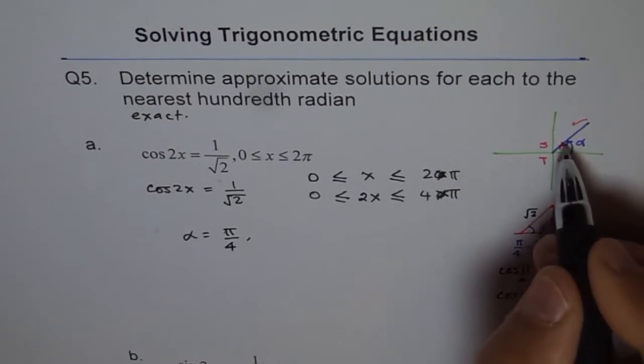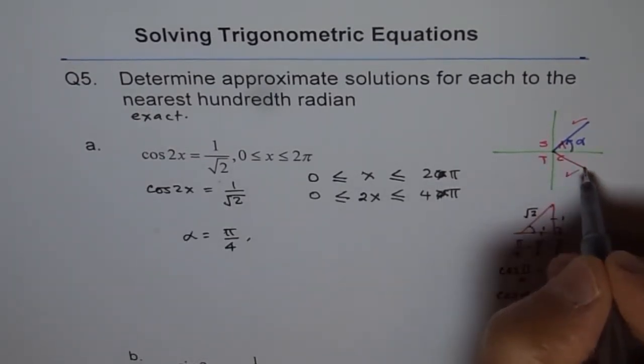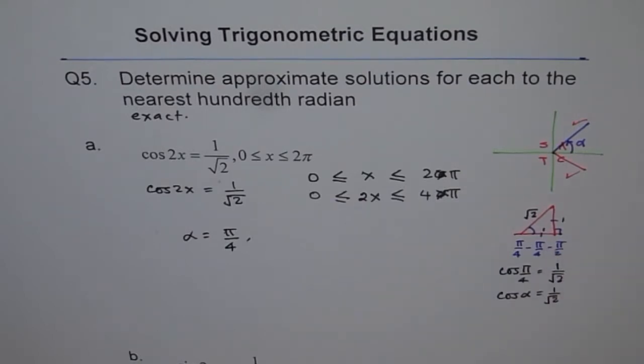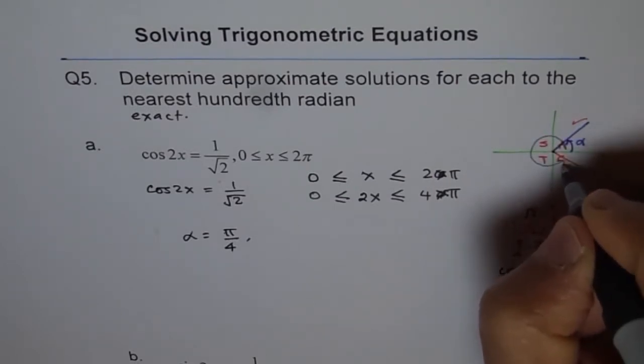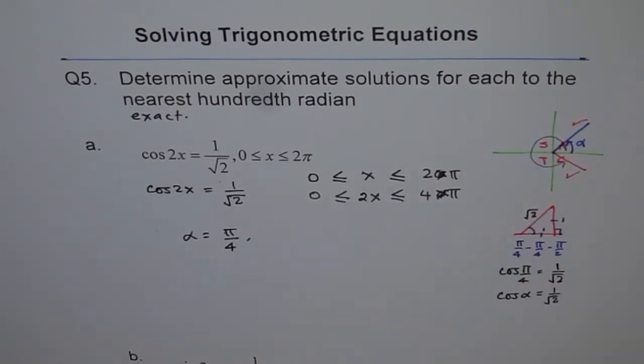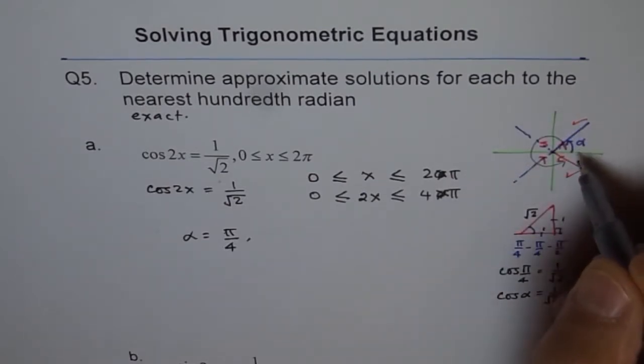Now, if alpha is π by 4, then what is the corresponding angle in quadrant 4? In quadrant 4, the angle should be, we'll go from here, one circle like this. Perfect. And that is 2π minus π by 4. So that's one way of calculating it. The other way, which is very easy, when we do radians, is like just count by π by 4.